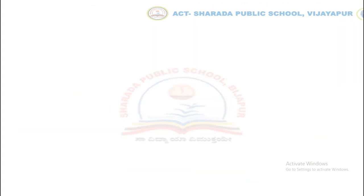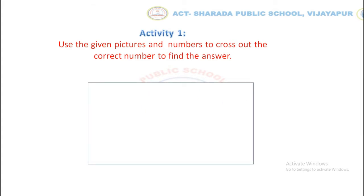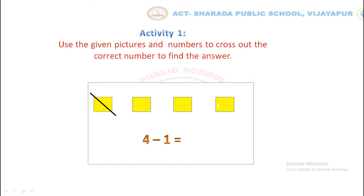Start with activity number 1. Use the given pictures and numbers to cross out the correct number to find the answer. Children, look at the rectangular box. There are four squares. The subtraction statement is 4 minus 1. So, put the cross mark on 1 square to get the answer. Now count the squares: 1, 2, 3. So the answer is 3. 4 minus 1 equals to 3.